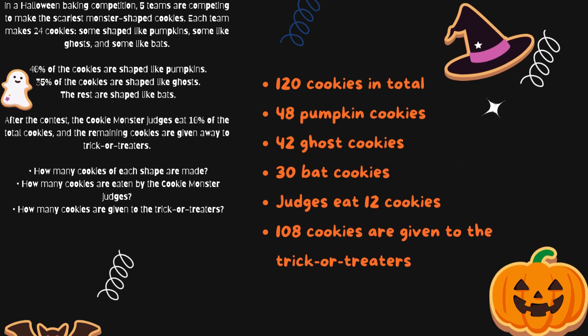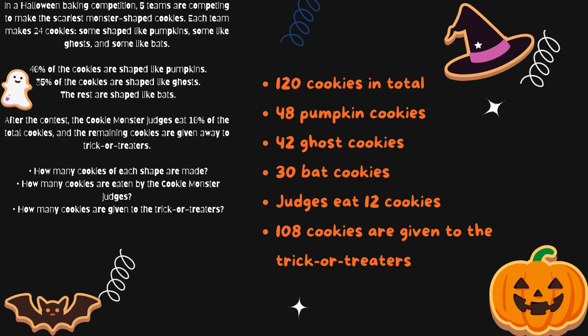So the summary is that there are 120 cookies in total, with 48 pumpkin cookies, 42 ghost cookies, and 30 bat cookies. The judges eat 12 cookies, and 108 cookies are given to the trick-or-treaters.